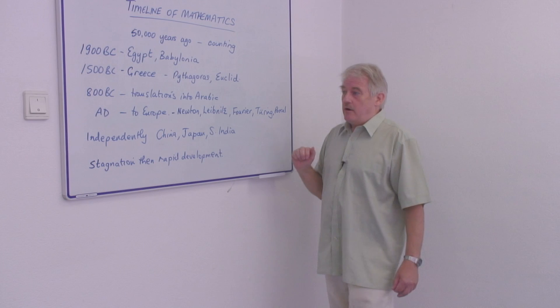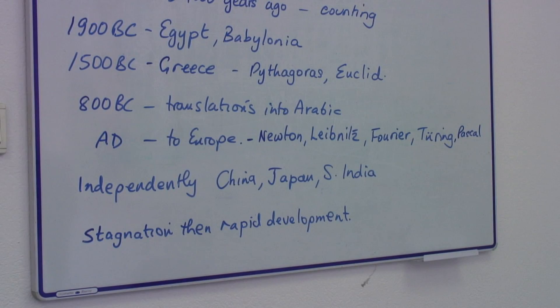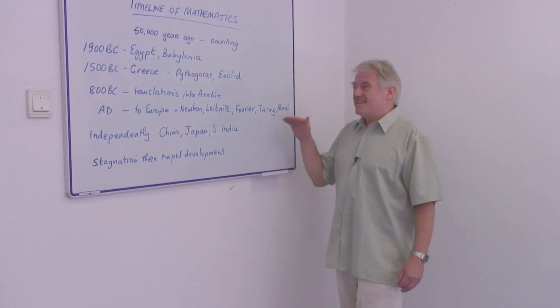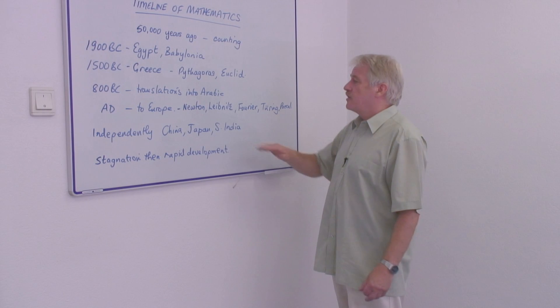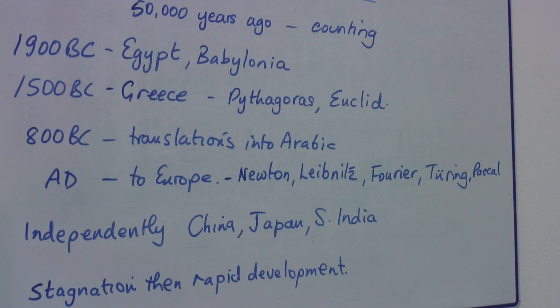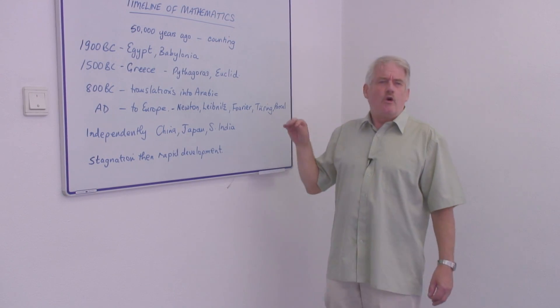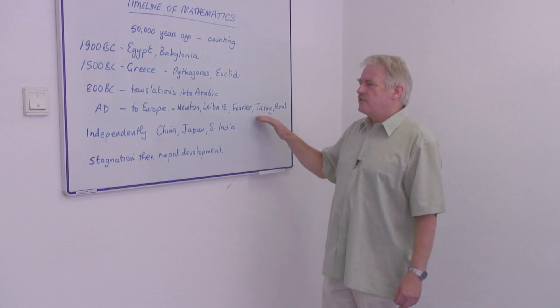After the Arabs, Europe came onto the scene too. But very much later, and it was really in the last 2,000 years where mathematics has developed in Europe, particularly in the last 500 years. And obviously names like Newton, Leibniz, Fourier, Pascal, and in the 20th century, people like Turing, and of course Einstein, developed mathematics theories much more related to physics, or theoretical physics, than just to mathematics.